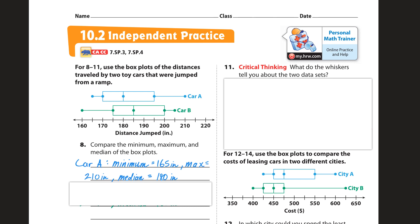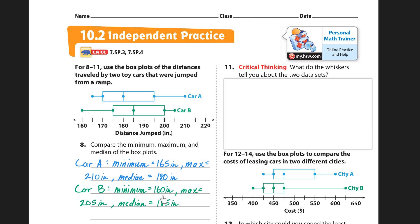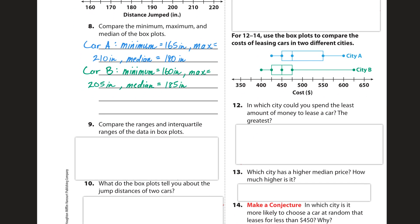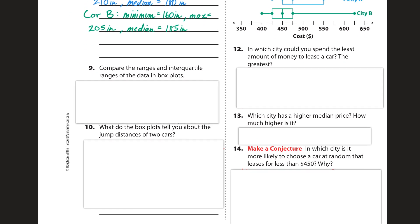For car B, the minimum is 160, the max is 205, and the median is 185. That's the line inside the box right there.